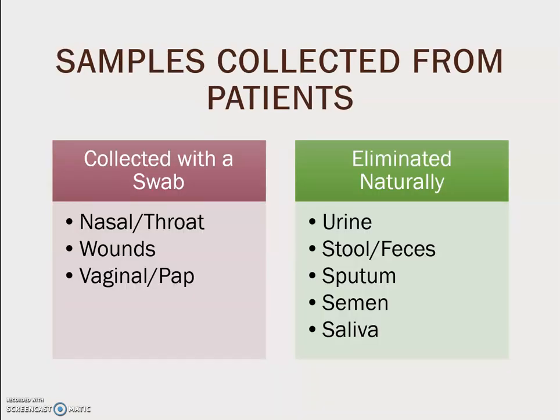Samples collected from patients can be collected with a swab — nasal or throat, wounds, vaginal or pap — or eliminated naturally, which could be urine, stool, feces, sputum, semen, or saliva. We will be covering collection with a swab in chapter 16.